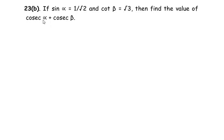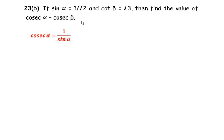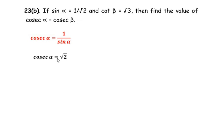Now sin alpha and cosec alpha are reciprocal trigonometric ratios of each other. So we can write cosec alpha is equal to 1 over sin alpha, and since sin alpha is given as 1 over root 2, the reciprocal of 1 over root 2 becomes root 2. So cosec alpha is equal to root 2.